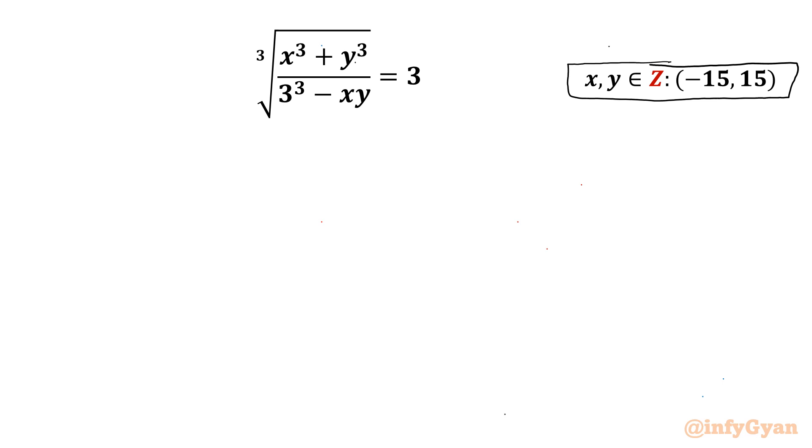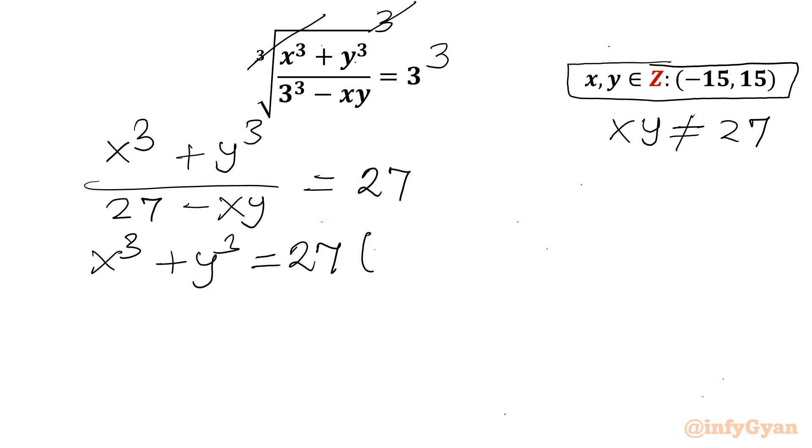So let us get started by writing our denominator cannot be 0. So xy cannot be equal to 3 cube which is 27. Now I will consider cubing both sides. So this cube root cube will be over. I can write x cube plus y cube divided by 27 minus xy equal to 27. Now I can cross multiply x cube plus y cube will be equal to 27 times 27 minus xy. Or I can write it is 27 square minus 27 xy.